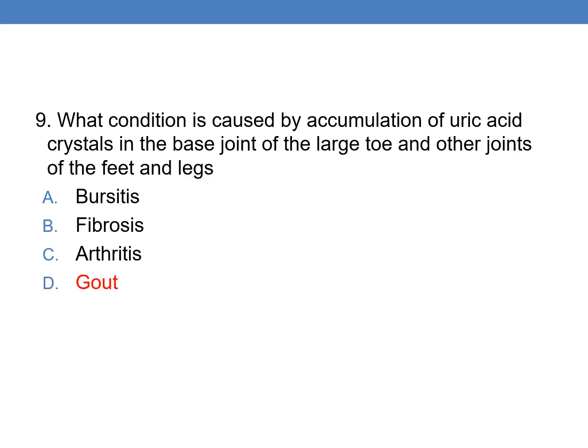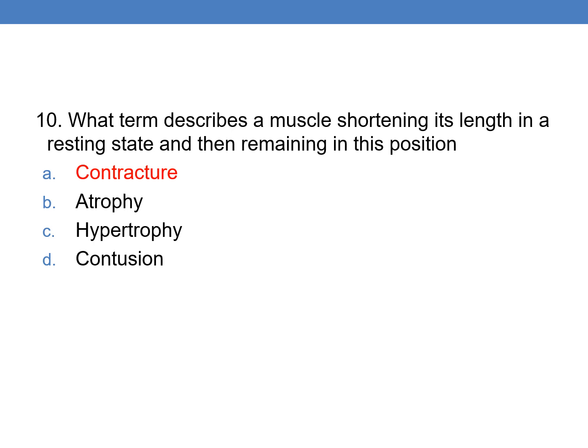What condition is caused by accumulation of uric acid crystals in the base joint of the legs, for example the toes and other joints of the feet and legs? The condition where uric acid crystals are deposited or accumulated at the base of the joint is gout.